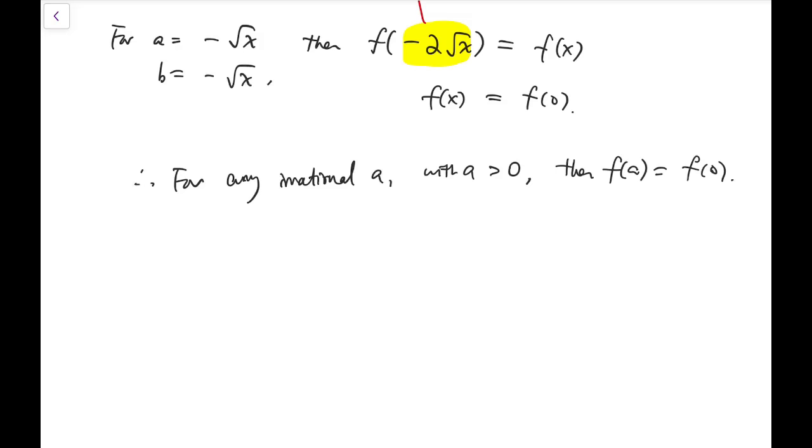Now the final part is to show that any rational number would give f of 0 as well. If we have that, then basically all numbers in the reals, after undergoing this function f would all just go to one single value, which is f of 0. So that would show that f is constant.